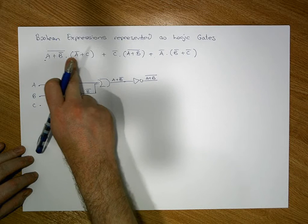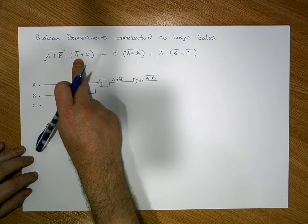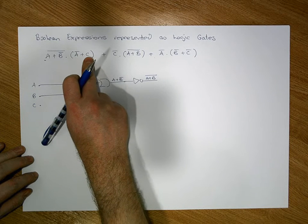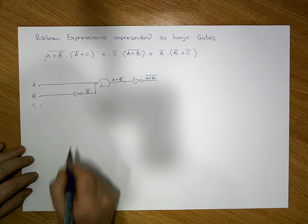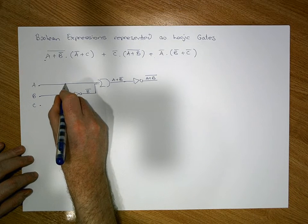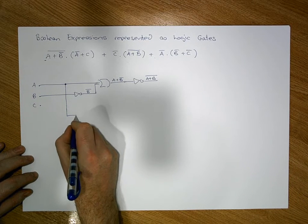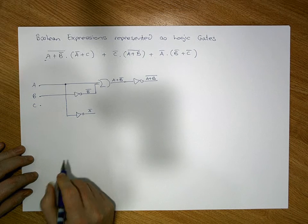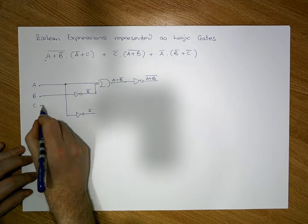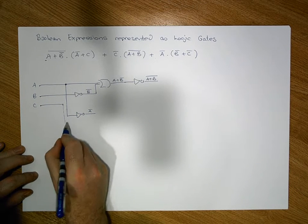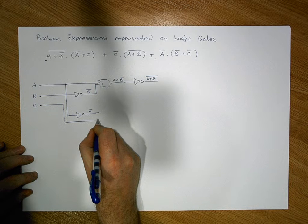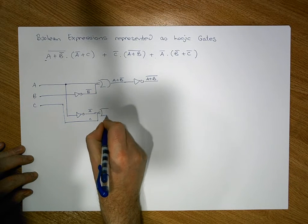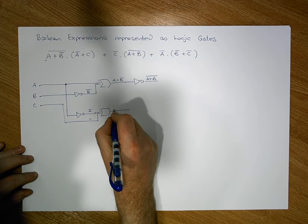Before we do the main AND, we need to do the right upper AND. The right upper AND requires an OR of A-bar with C. Before we can do the OR we need an A-bar signal, so we pass the A signal into an inverter to give us A-bar. Then we take our C signal and pass it into an OR gate along with A-bar.